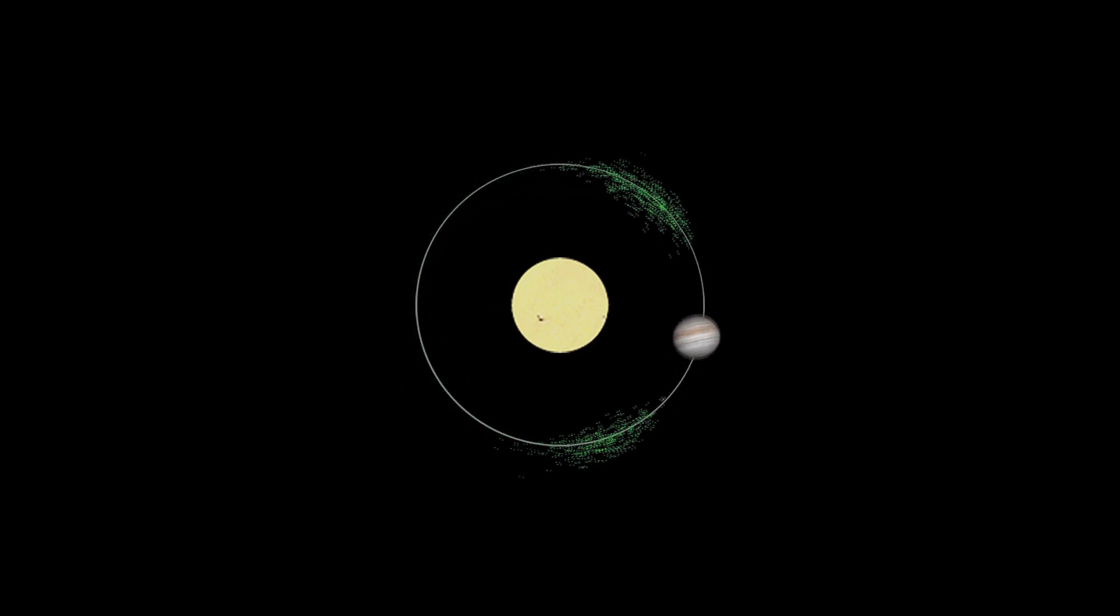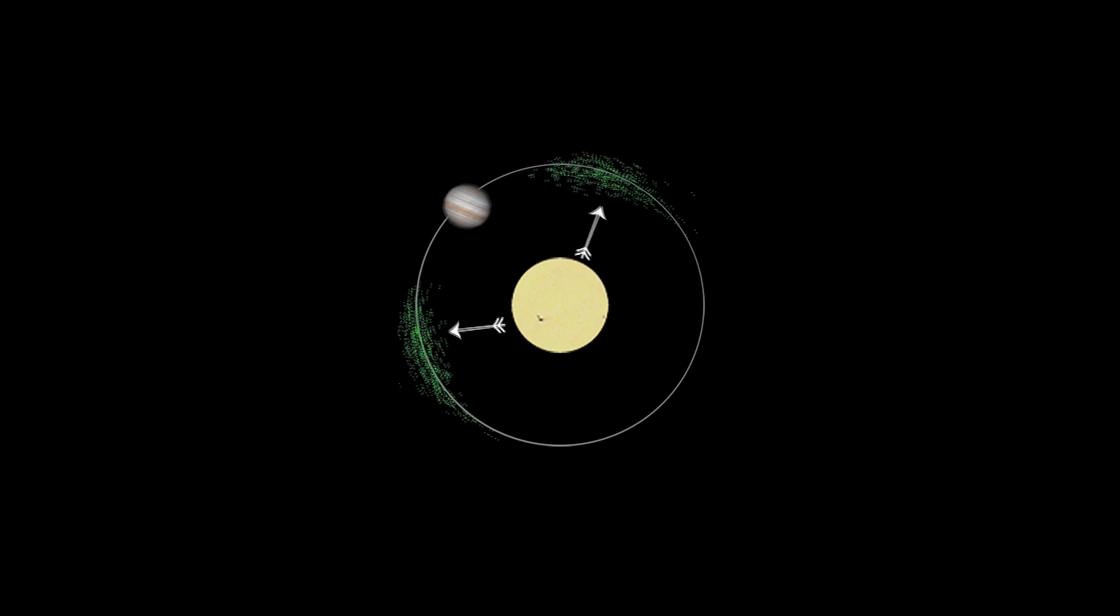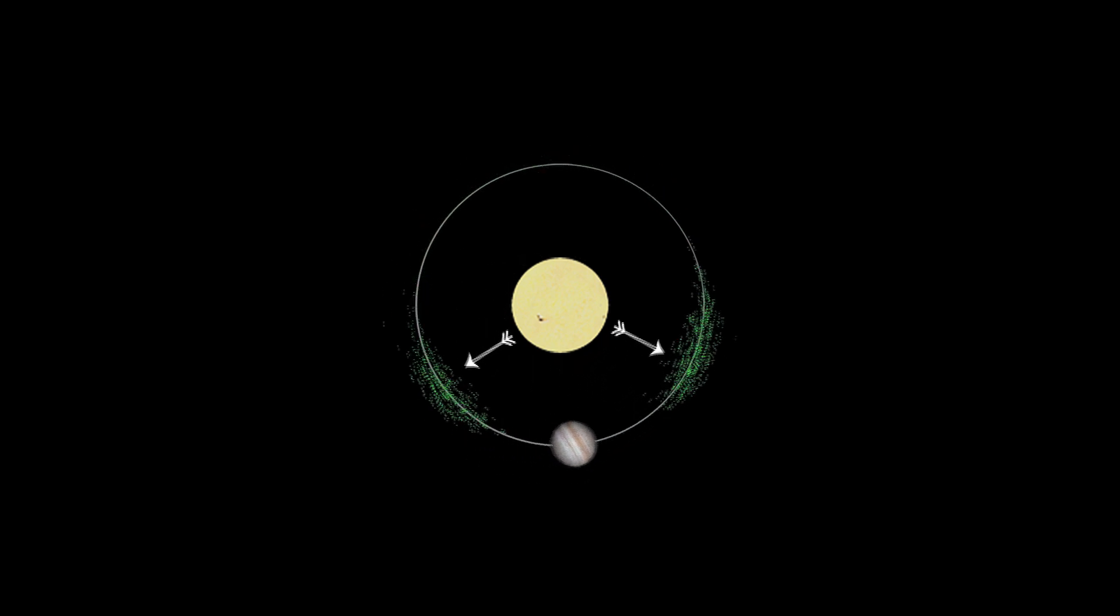In its travels, it also picked up the Trojan asteroids, which now orbit 60 degrees ahead of and behind Jupiter.